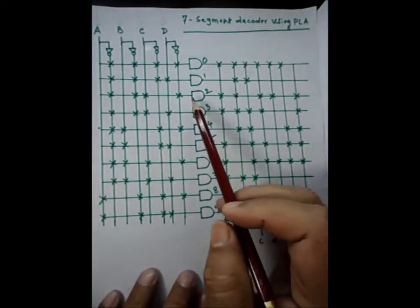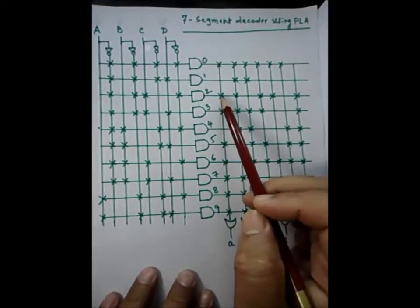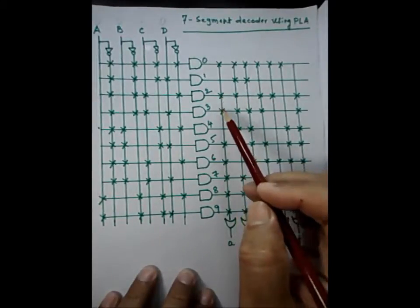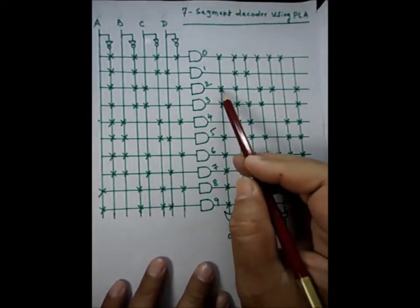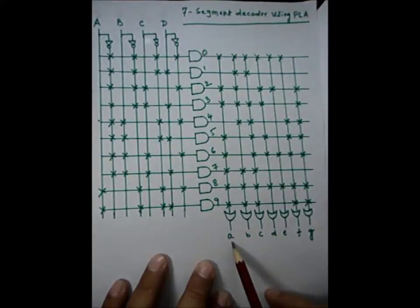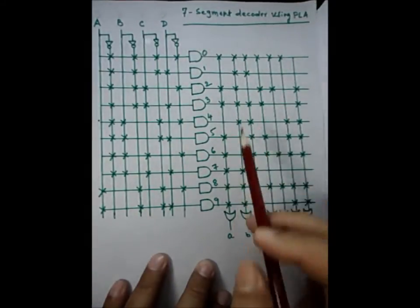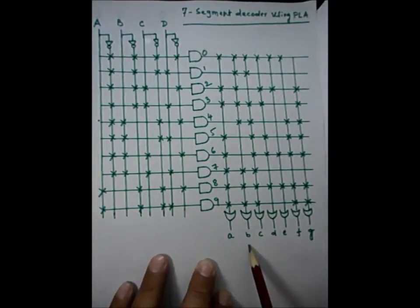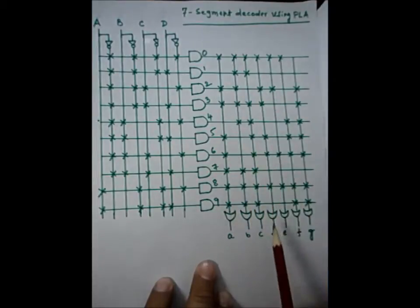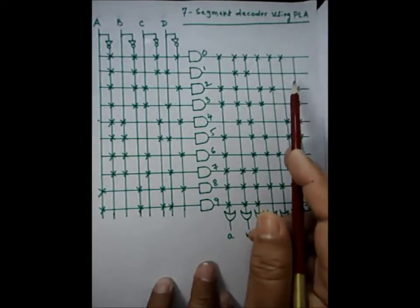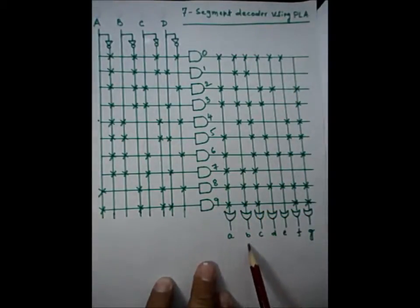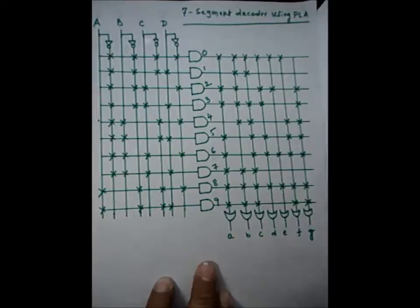Coming back to the PLA for displaying digit two, you can see the connections. A is connected to one of the inputs of an OR gate, so A's output will be high. B's output will also be high. C is not connected. D's output is high, E's output is high, and G's output is high.